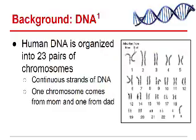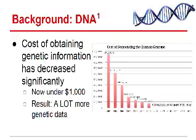Human DNA is organized into 23 pairs of chromosomes, which are just continuous strands of DNA, and you get one chromosome from mom and one from dad. Currently the cost of obtaining genetic information has gone down significantly — you can now sequence your entire DNA for just under a thousand dollars, compared to nearly 61 million dollars in 2002. This has resulted in a lot more genetic data, which causes some issues from a statistical standpoint because you need to learn how to use all of this data in your analyses.